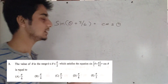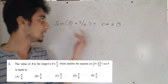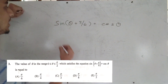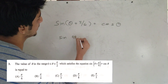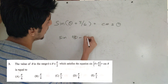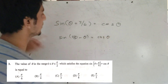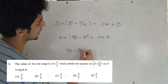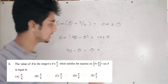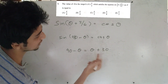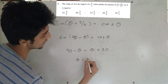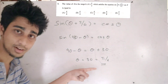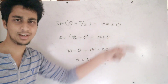The value of π/6 is equal to 30 degrees. Using sin(90° − θ) = cos θ: 90° − θ = θ + π/6 (which is 30°), so 2θ = 60°, giving θ = 30° = π/6. The answer is option A. This is a very powerful method.